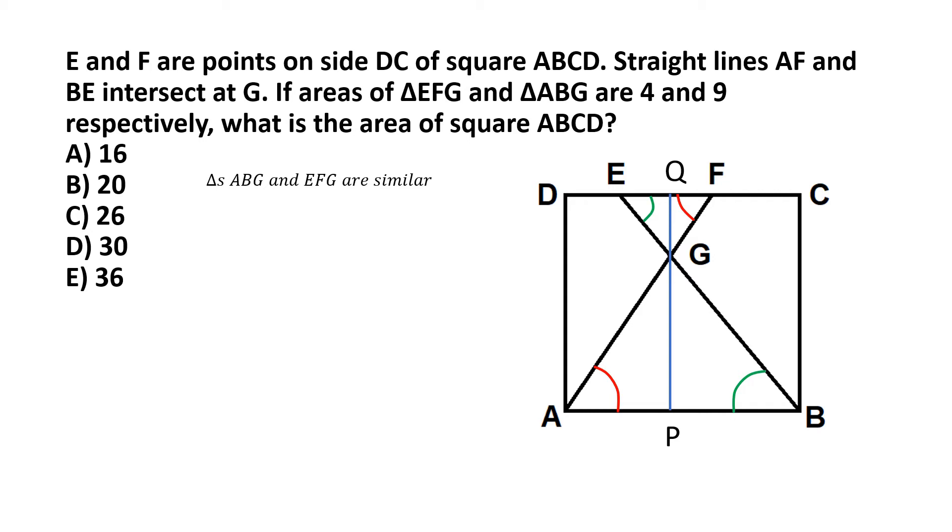Now this line PQ, because it's parallel to the sides AD and BC of the square, this line should be perpendicular to the other two sides AB and DC. And in effect this line becomes the altitude to the triangles ABG and EFG. So PG becomes the altitude of triangle ABG and GQ becomes the altitude of triangle EFG.